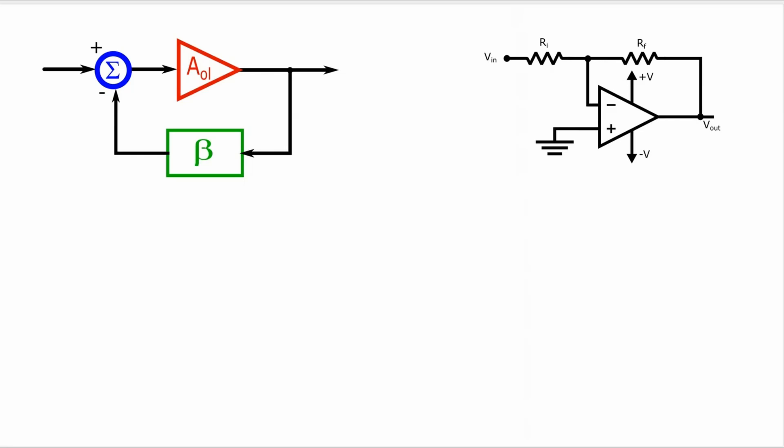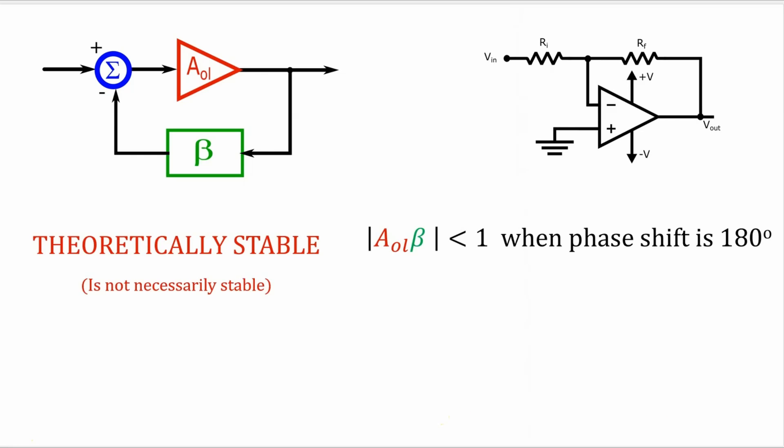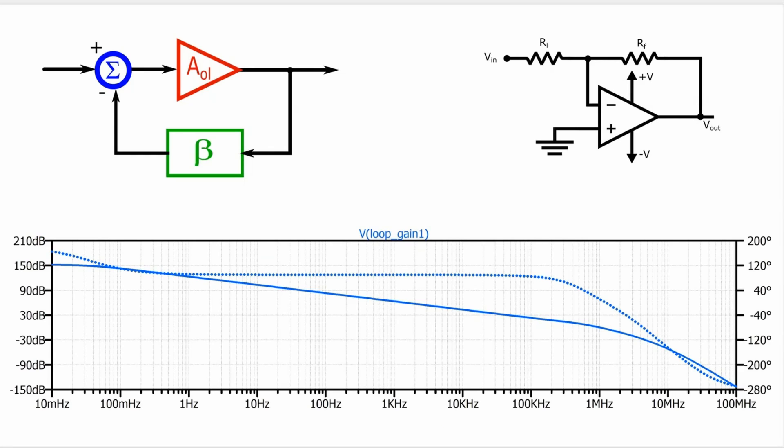So this has just been a brief introduction to the idea of stability and negative feedback amplifiers. We looked at what stability is. We looked at how to determine if an amplifier is theoretically stable. And we looked at how to use the phase and gain margins to determine if the amplifier is sufficiently stable. Now there's a lot more to learn about stability, but hopefully this gives you a good start. Thank you so much for watching. See you soon.